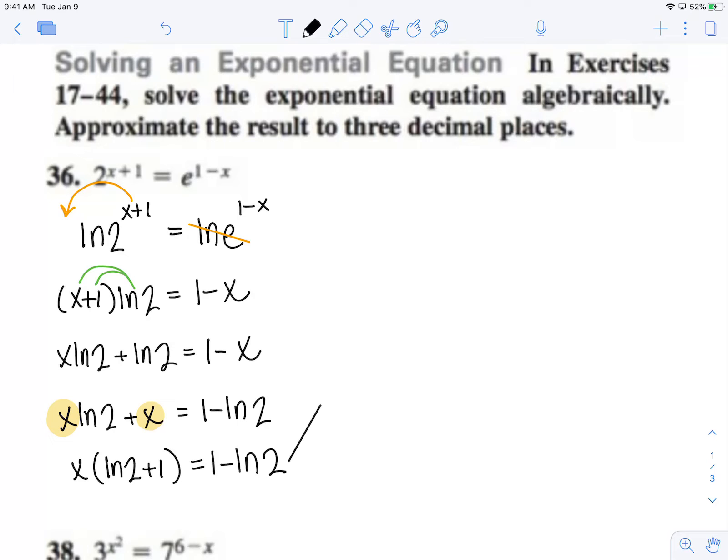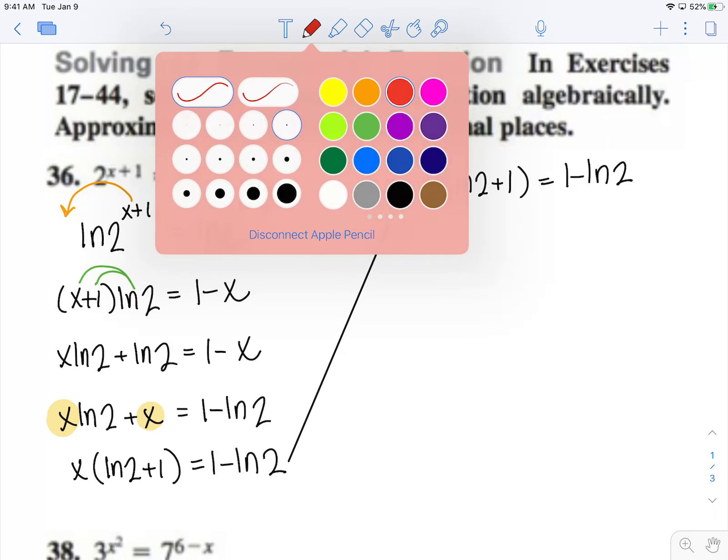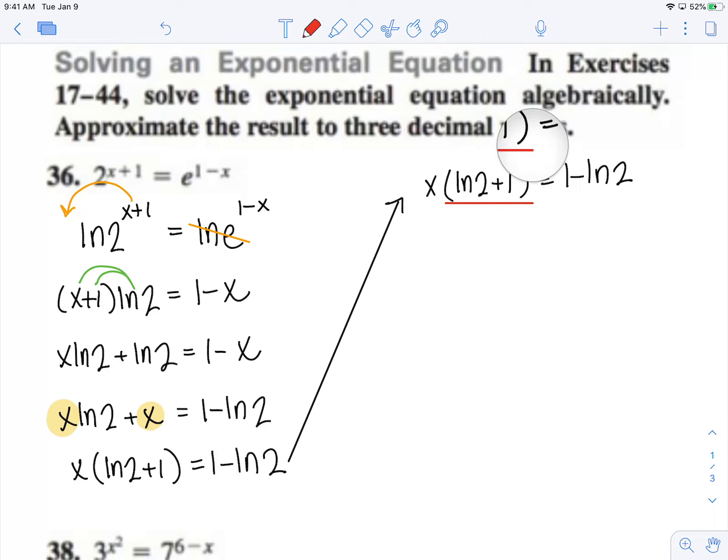Let me bring this up and rewrite it. So x times the quantity ln 2 plus 1 equals 1 minus ln of 2. Now to get x by itself, I can divide both sides by this quantity.